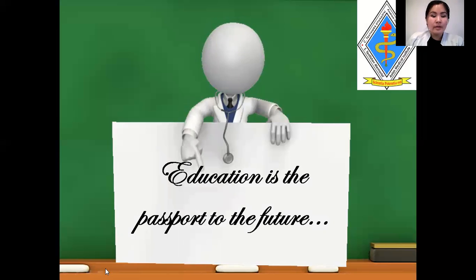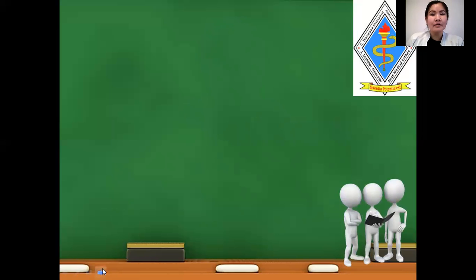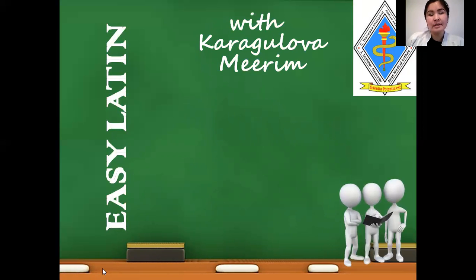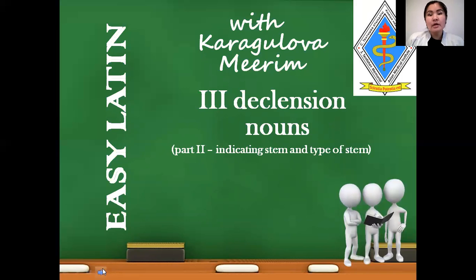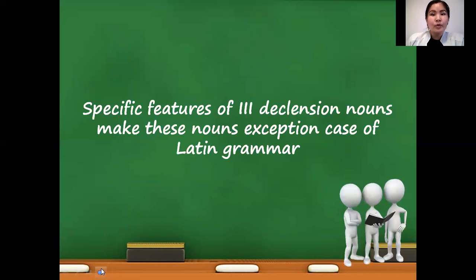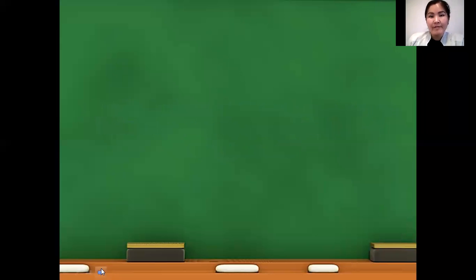So let's start our lesson. Today we are continuing discussing third declension nouns. In the previous lesson, I taught you how to construct the genitive form of third declension nouns. Today, we are continuing discussing them and I'm going to explain how to indicate the stem and type of stem of third declension nouns. You already know that according to endings used to construct the genitive, Latin nouns can be divided into five declensions. Most of our attention is paid to third declension nouns because of their exceptional features in Latin grammar.